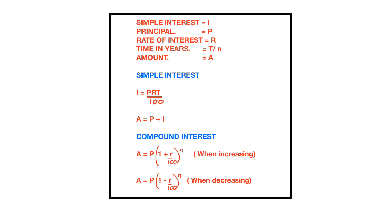We need to know that simple interest is written as I, principal as P, rate of interest as R, time in years as T when finding simple interest, and as N when finding compound interest. Amount is written as A.